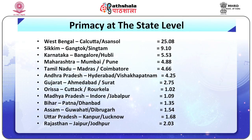Primacy at the state level: in West Bengal, Calcutta to Asansol equals 25.08. In Sikkim, Gangtok to Singtam equals 9.10. In Karnataka, Bangalore to Hubli equals 5.53. In Maharashtra, Mumbai to Pune equals 4.88. In Tamil Nadu, Madras to Coimbatore equals 4.66. In Andhra Pradesh, Hyderabad to Vishakhapatnam equals 4.25. In Gujarat, Ahmedabad to Surat equals 2.75. In Orissa, Cuttack to Rourkela equals 1.02. In Madhya Pradesh, Indore to Jabalpur equals 1.09.